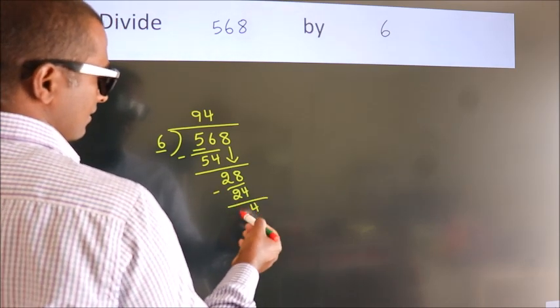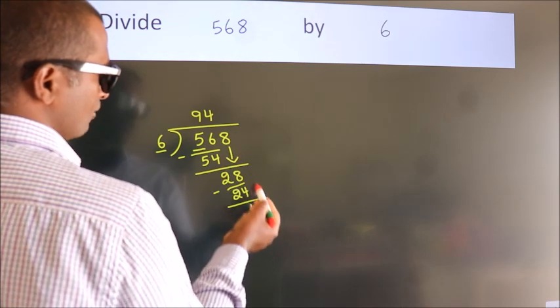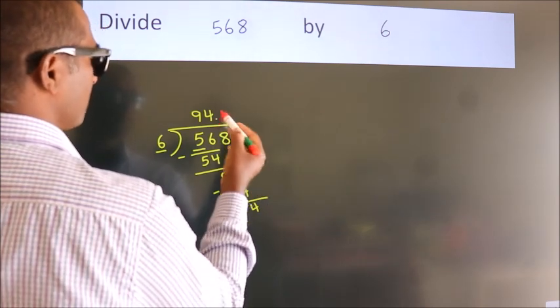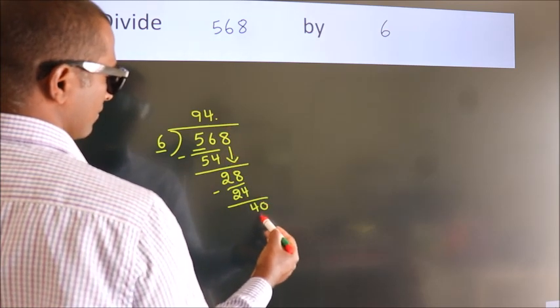After this, no more numbers to bring down. So what we do is, we put dot, take 0. So, 40.